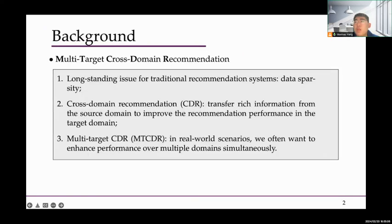We start with the background of our paper. Our study focuses on multi-target cross-domain recommendation. Data sparsity has been a long-standing issue for recommendation systems, and cross-domain recommendation was introduced to address this issue, aiming to transfer rich information from the source domain to improve recommendation performance in the target domain. The goal of the MT-CDR problem is to enhance performance of recommendations over multiple domains.